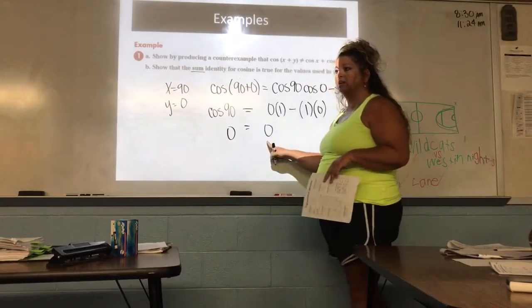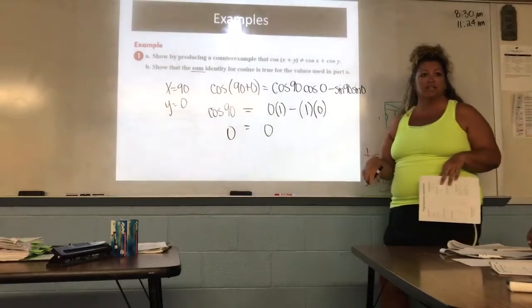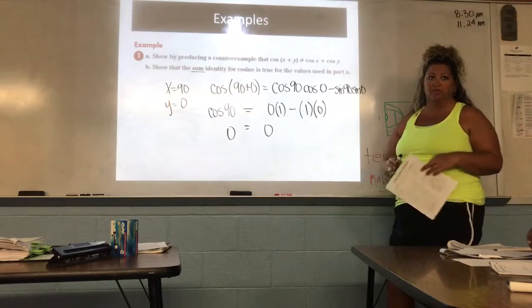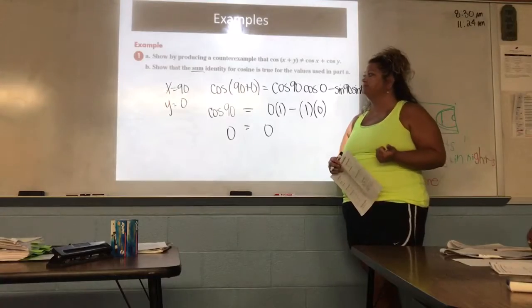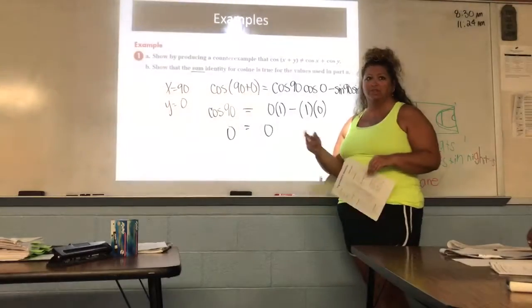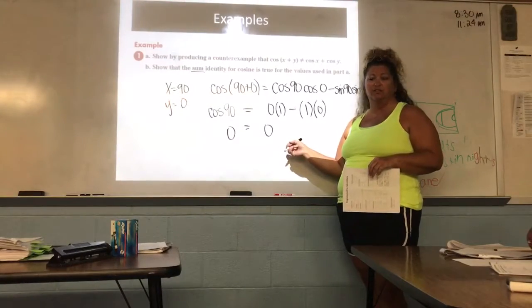So this equals zero on this side. So over here, we have cosine of 90. And what did we find out when we looked at our unit circle? What was cosine of 90? Zero. Now are these equivalent? Yes. So our identity works, but just trying to distribute like we usually do in other math does not work, right? Like in algebra. That's why we have to use this identity.